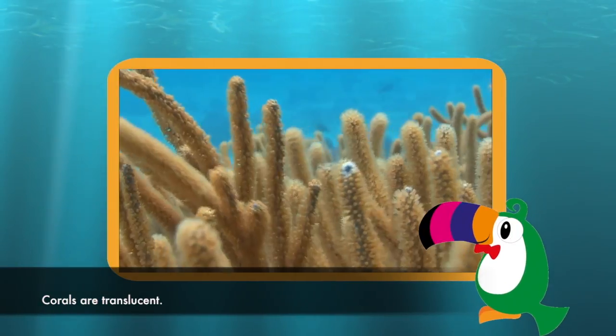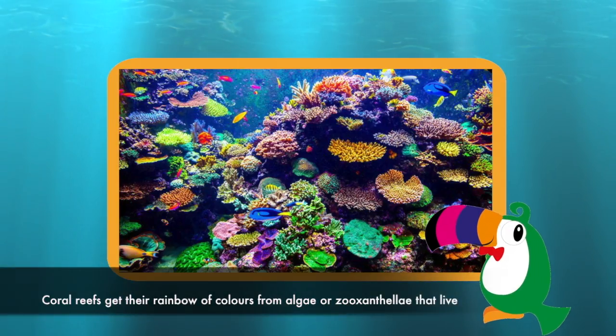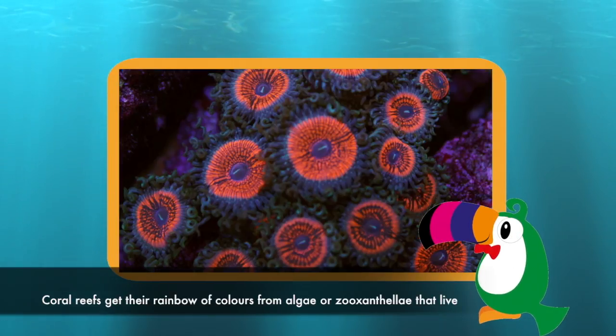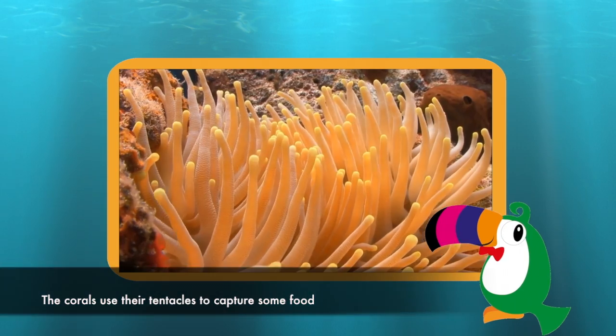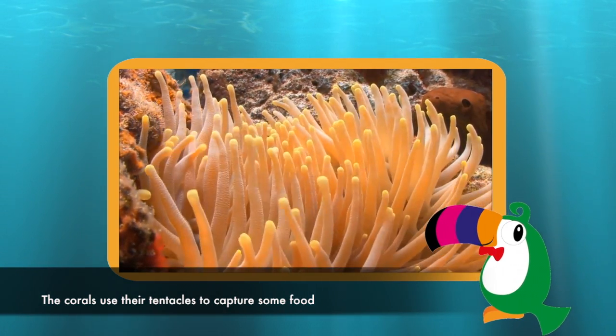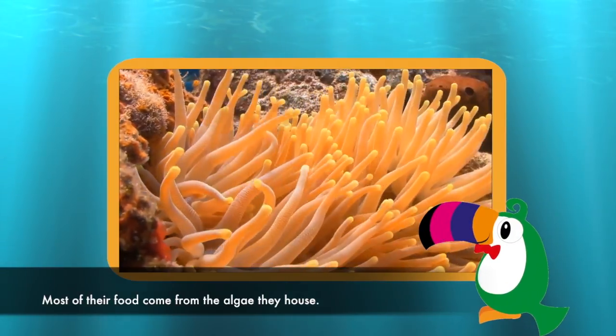Coral are translucent. Coral reefs get their rainbow of colors from algae or zooxanthellae that live in their tissue. Though corals use their tentacles to capture some food, most of their food comes from the algae they house.